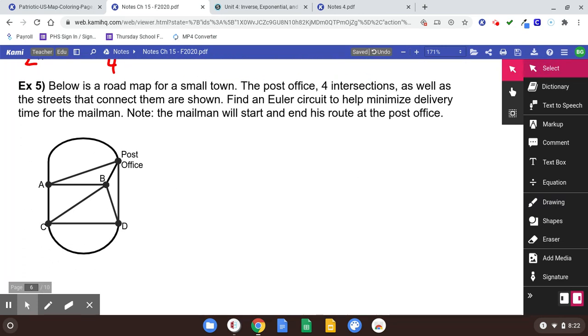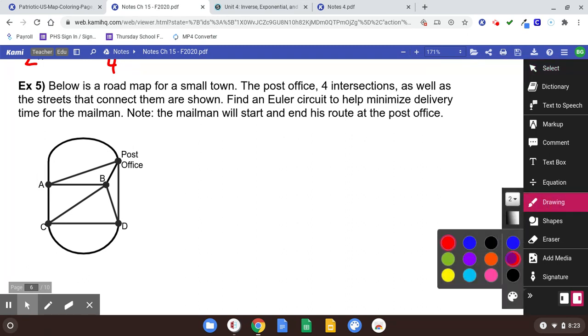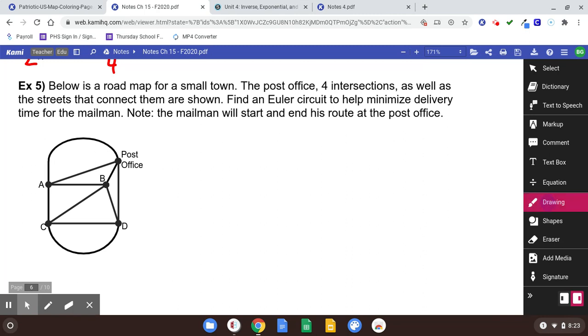Number five. Below is a roadmap for a small town. The post office, four intersections as well as the streets that connect them are shown. Find an Euler circuit to help minimize delivery time for the mailman. The mailman will start and end his route at the post office. That's what makes it a circuit. We're going to start at the post office. It's basically the same question.